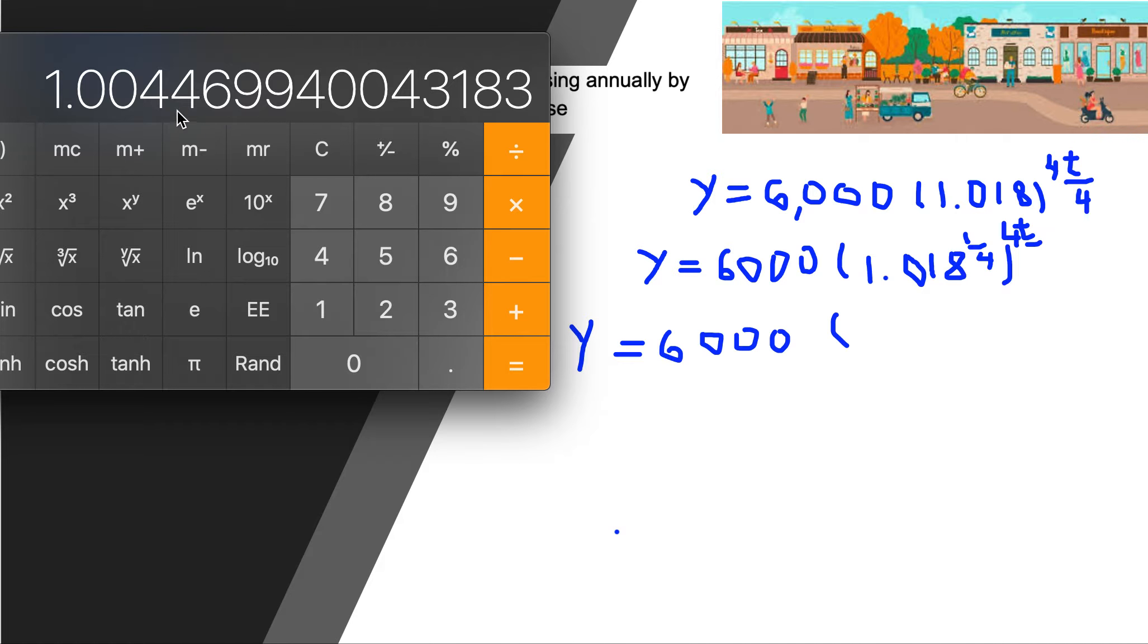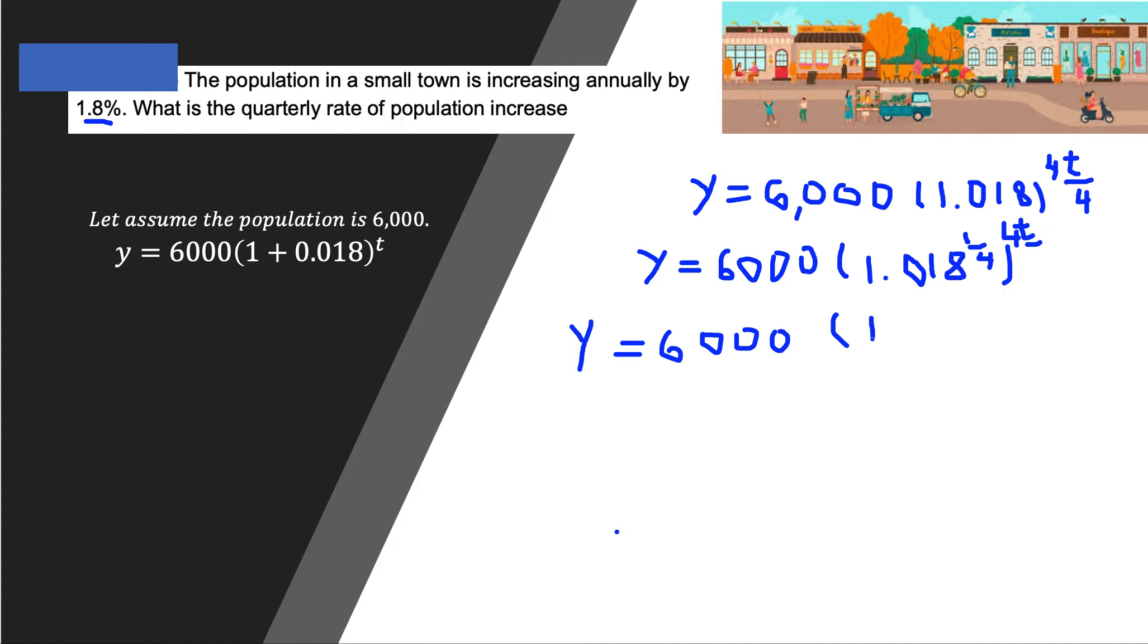I'm going to get this value here, 1.004469, but I'm going to approximate this number to 1.00447. Everything is in exponent 4t.